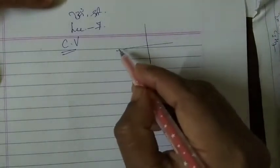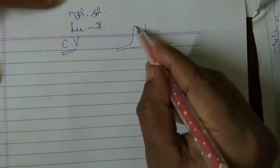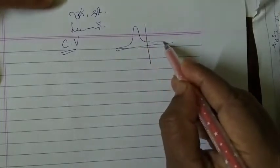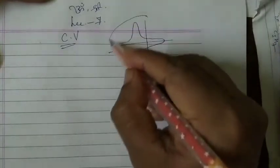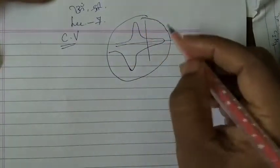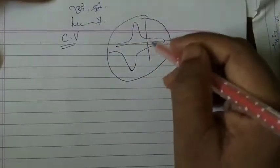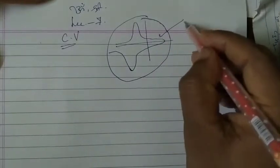Welcome to lecture 7. In the last video we learned about cyclic voltammetry — how the plot is obtained and all the technical points with respect to cyclic voltammetry. Today we will go for the next concept of cyclic voltammetry.